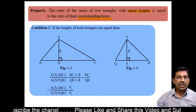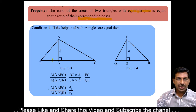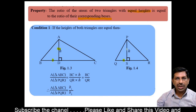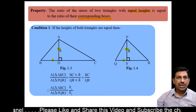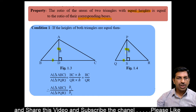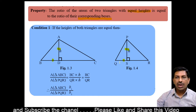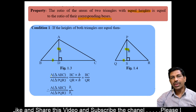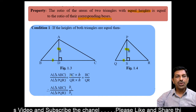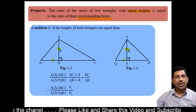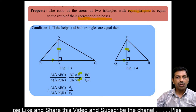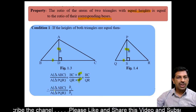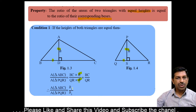Let us understand this with a figure. In triangle ABC and triangle PQR, BC is the base of triangle ABC and QR is the base of triangle PQR. AD is the height of triangle ABC and PS is the height of triangle PQR. We can clearly see that the heights of triangle ABC and triangle PQR are equal, but the bases are unequal. So area of triangle ABC by area of triangle PQR equals BC into H upon QR into H. The heights cancel out, giving area of triangle ABC by area of triangle PQR equal to BC by QR, that is B1 upon B2.